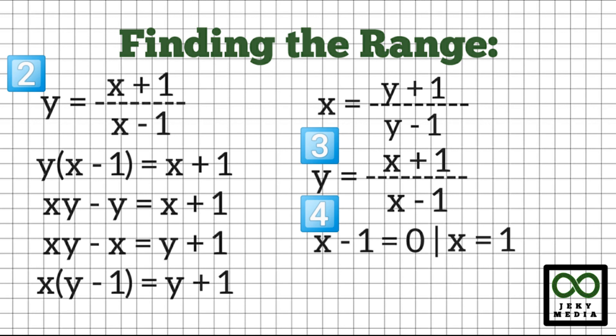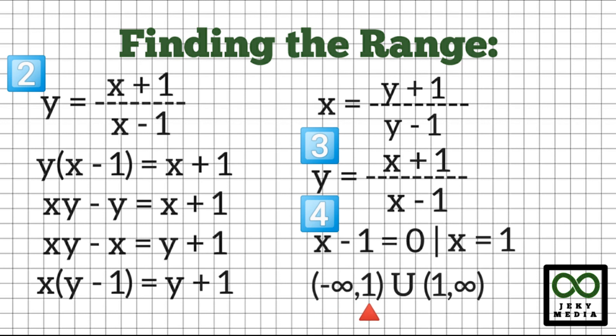This means that the range are all real numbers except positive 1. Let's represent this again by interval notation: open parenthesis, negative infinity, comma, positive 1, close parenthesis, union, open parenthesis, positive 1, comma, positive infinity, close parenthesis. Thank you.